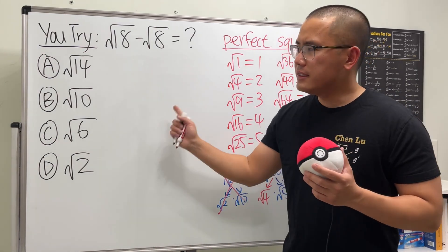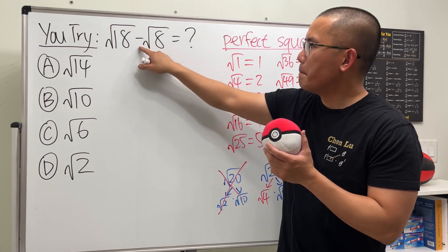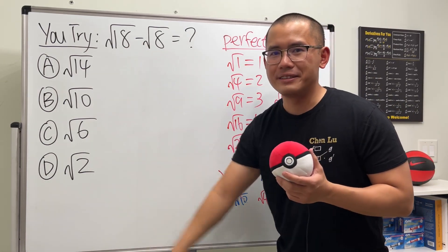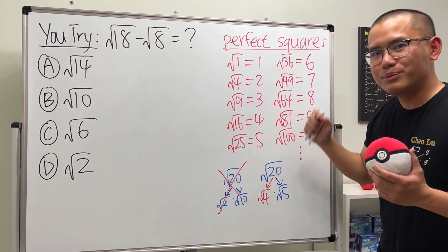Okay, before we go, this is the question that I want you to try. Square root of 18 minus square root of 8. Well, comment down below what the answer is. And you can use this right here to help you, right?